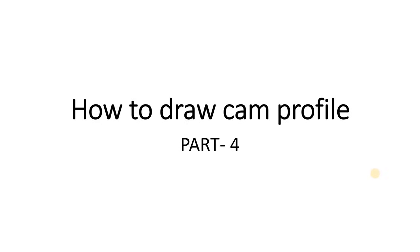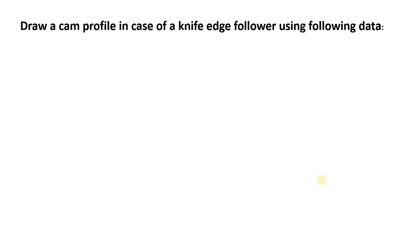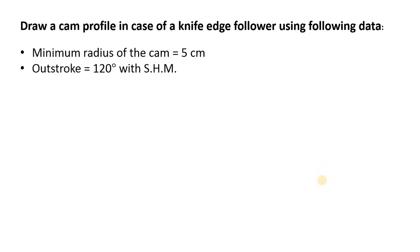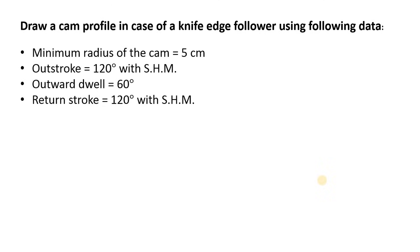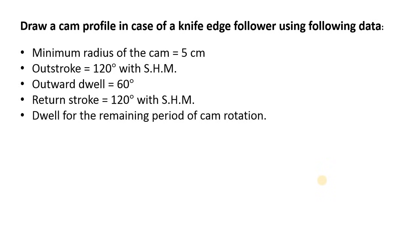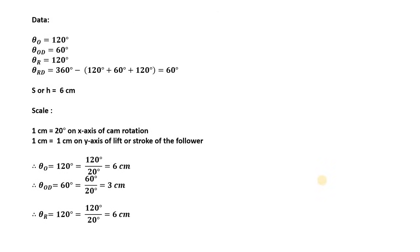In this video we will try to understand how to draw a cam profile. We have to draw a cam profile in case of a knife edge follower using the following data: minimum radius of the cam is 5 cm, out stroke is 120 degrees with simple harmonic motion, outward dwell is 60 degrees, return stroke is 120 degrees with simple harmonic motion, and dwell for the remaining period. Stroke or lift of the follower is 6 cm.